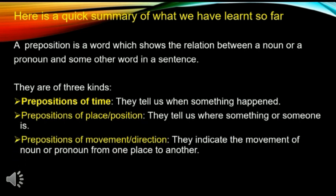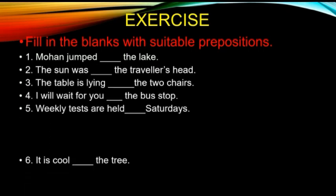We have come to the end of our topic, preposition. Here is a quick summary of what we have learned. A preposition is a word which shows the relation between a noun or a pronoun and some other word in a sentence. Prepositions are of three kinds: prepositions of time, which tell us when something happened; prepositions of place or position, which tell us where something or someone is; and prepositions of movement or direction, which indicate the movement of a noun or pronoun from one place to another. Hope you have understood the topic properly. Thank you.